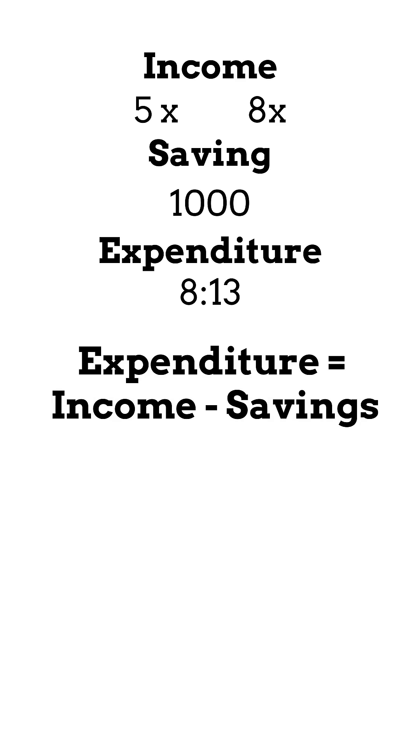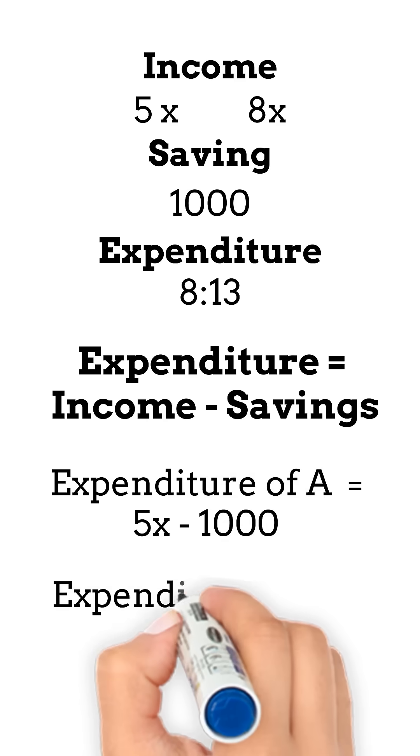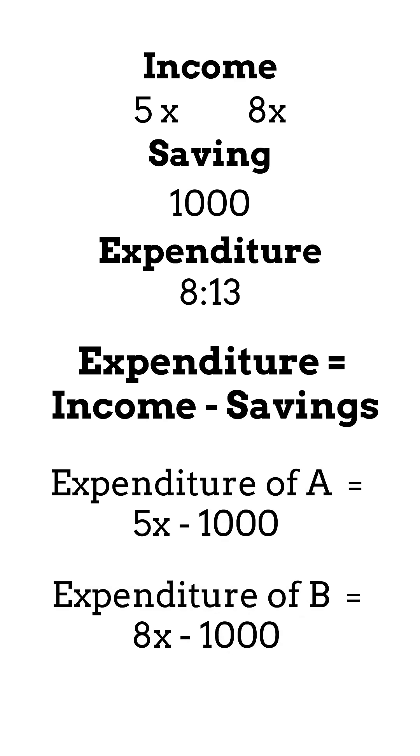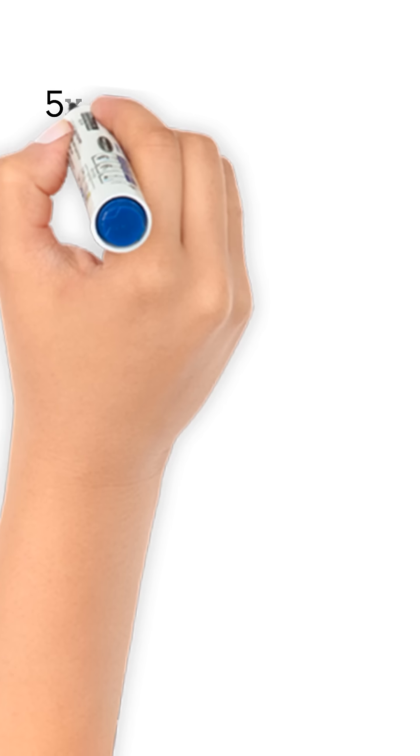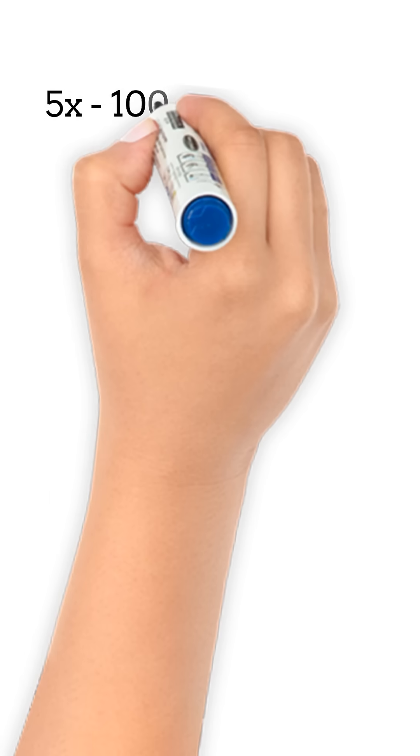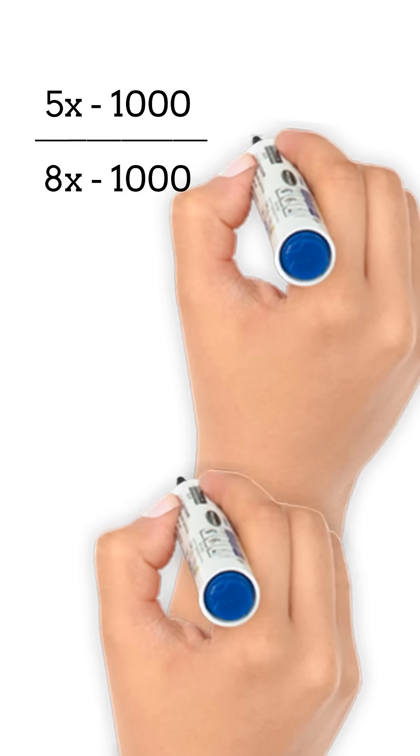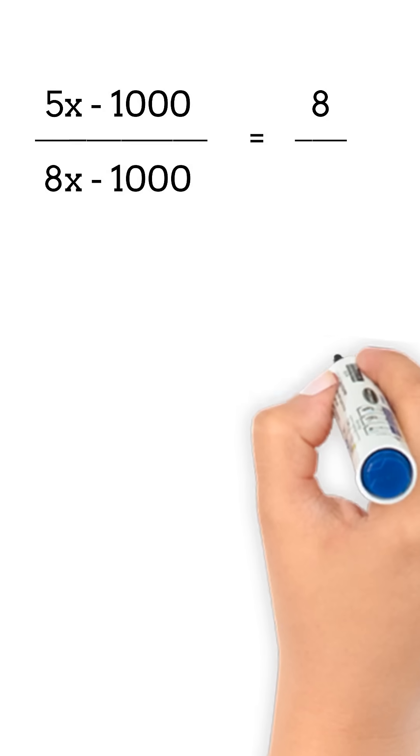Substituting the given values, expenditure of A is 5x minus 1,000 and expenditure of B is 8x minus 1,000. By using proportion, we can write 5x minus 1,000 upon 8x minus 1,000 is equal to 8 upon 13.